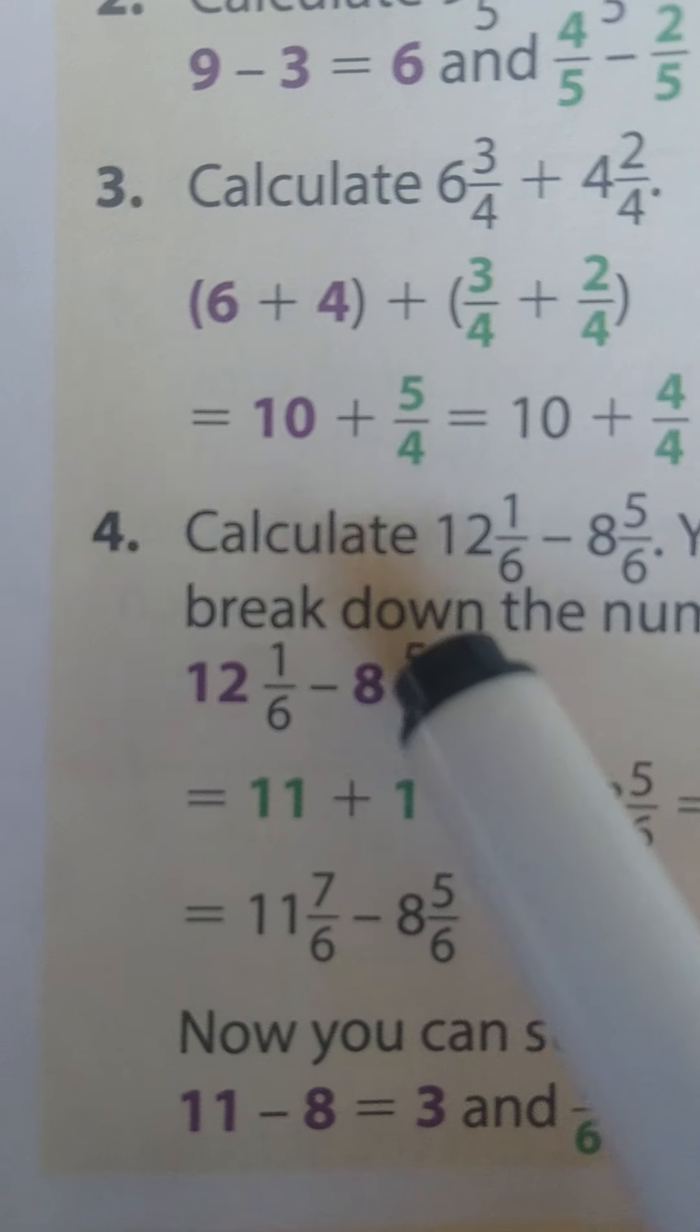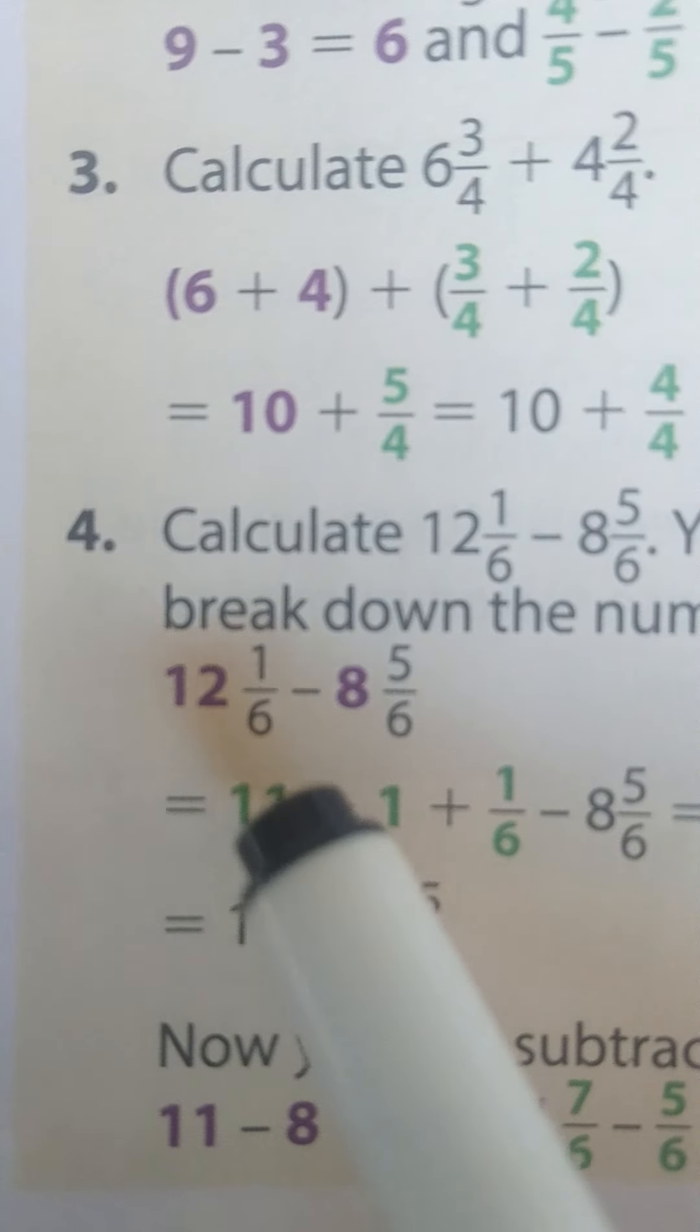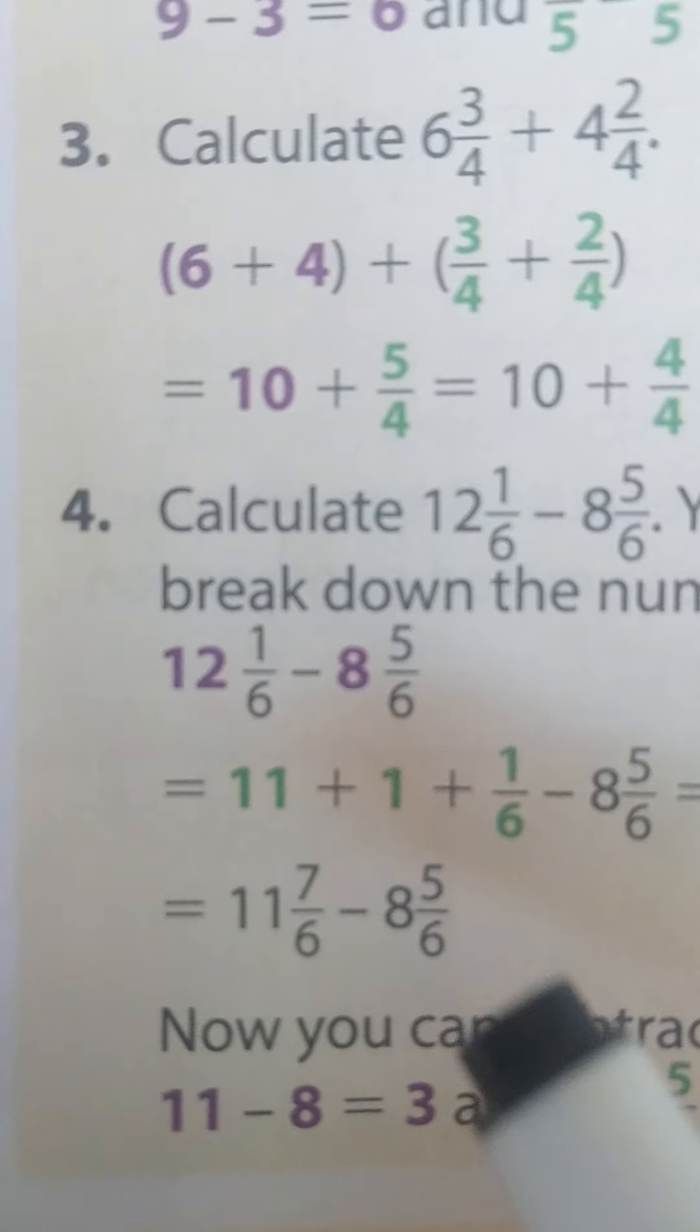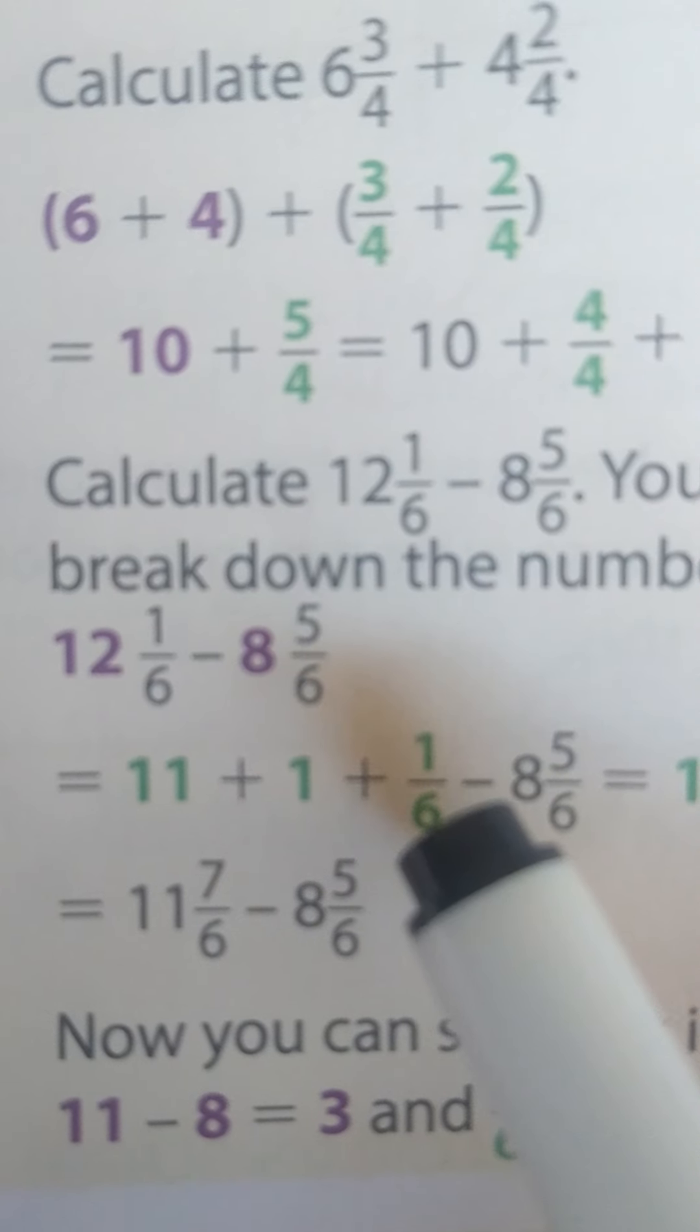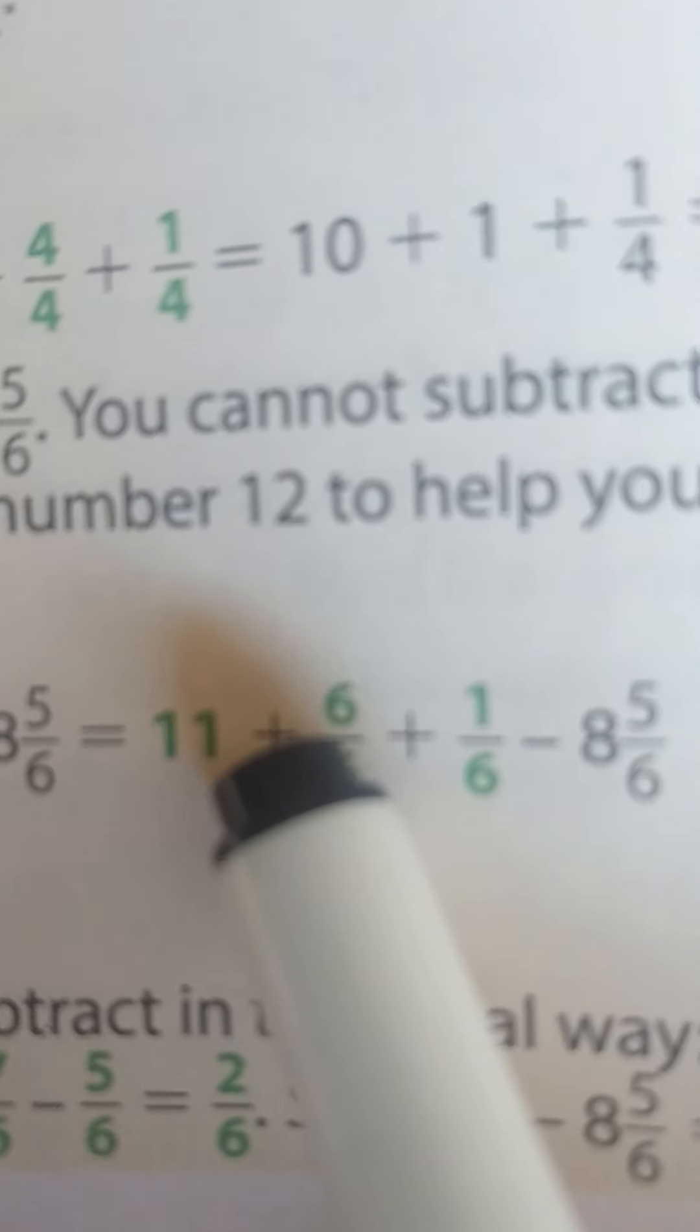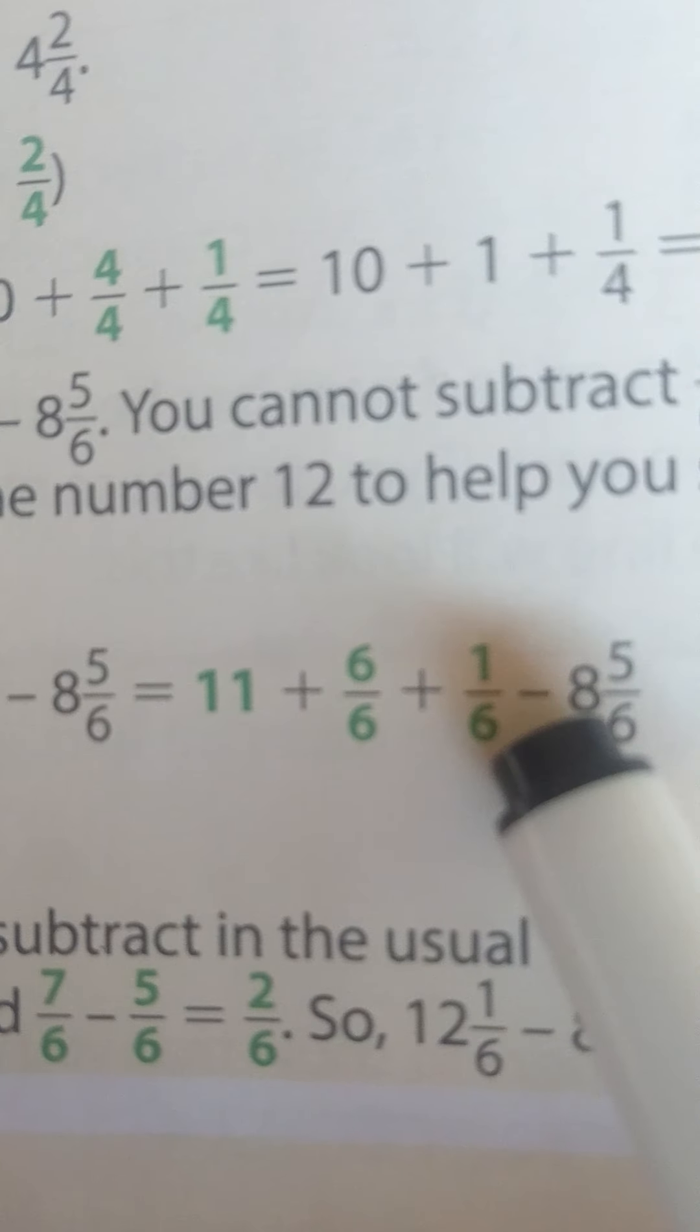Now 1 is smaller than 5. Therefore we need to borrow from the whole number on this side here. So we are going to make it 11 and we are going to give 1 whole to the ⅙. 1 whole can also be written as ⁶⁄₆. Like here. So we are going to say ⁶⁄₆ + ⅙ and we are going to get ⁷⁄₆.